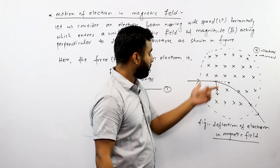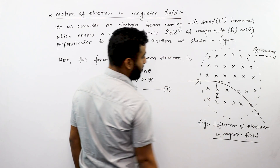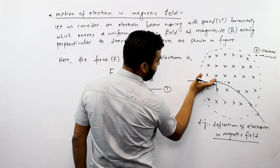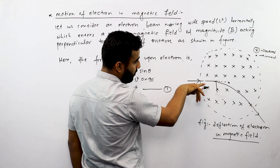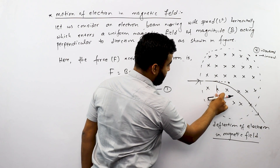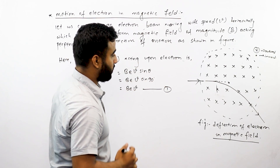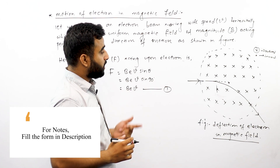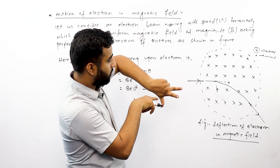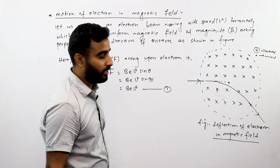The Lorentz force is perpendicular to the motion of the electron. The electron moves along the magnetic field. The magnetic field acts between the charge particles, which gives rise to what is called the Lorentz force. The Lorentz force direction is determined using Fleming's left hand rule. The Lorentz force causes the electrons to be deflected in the downward direction.